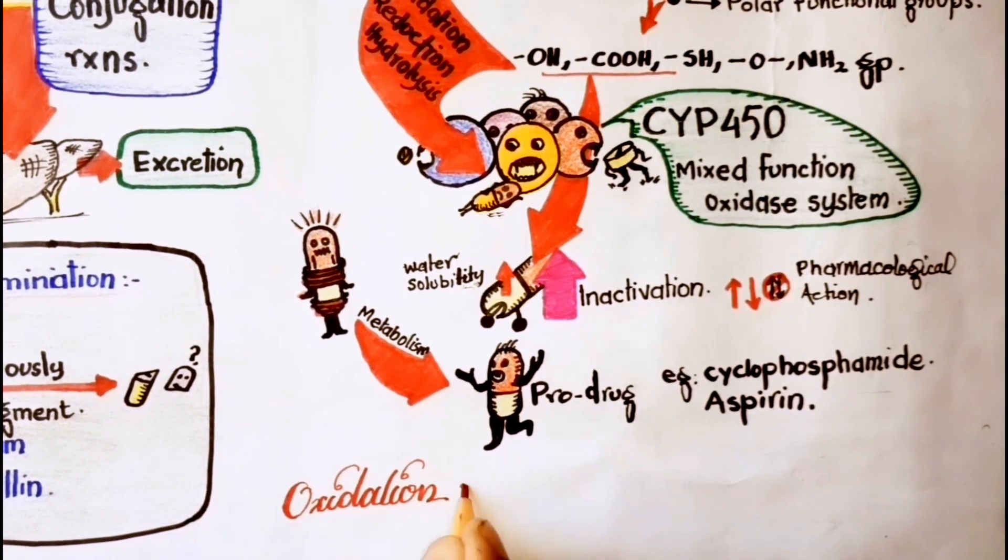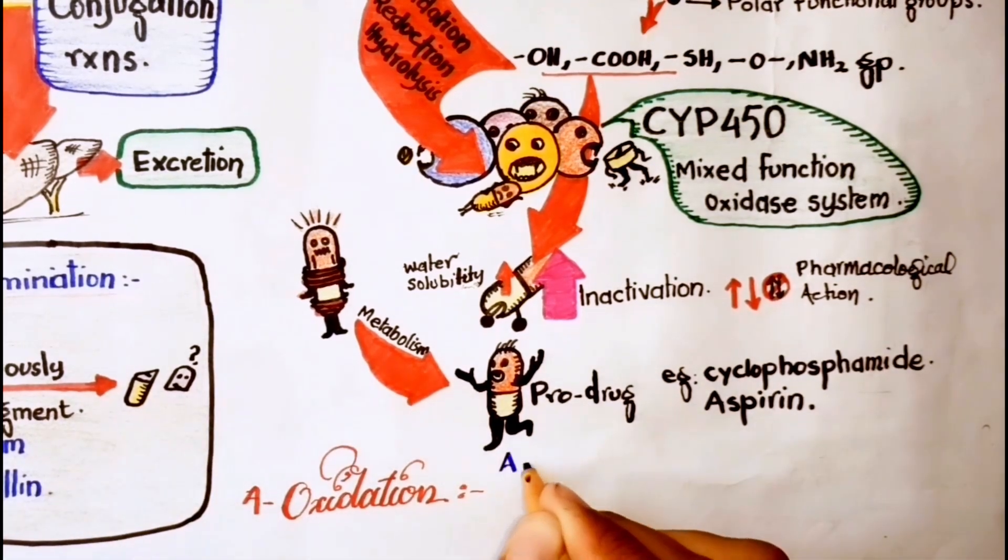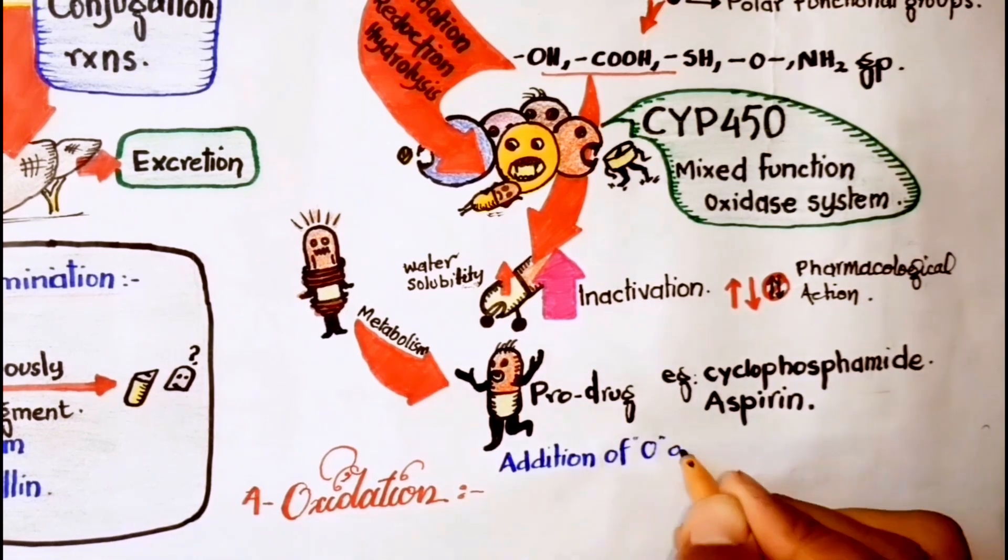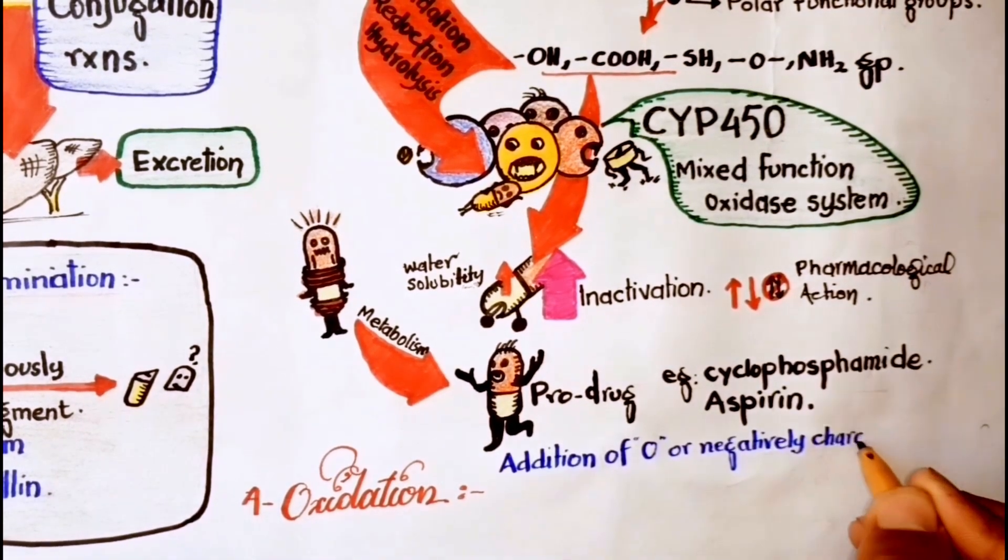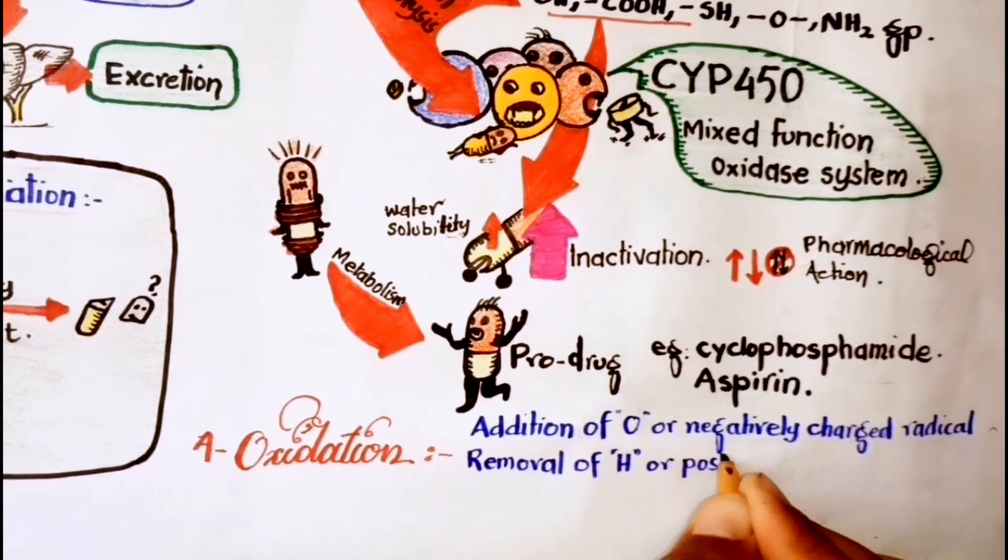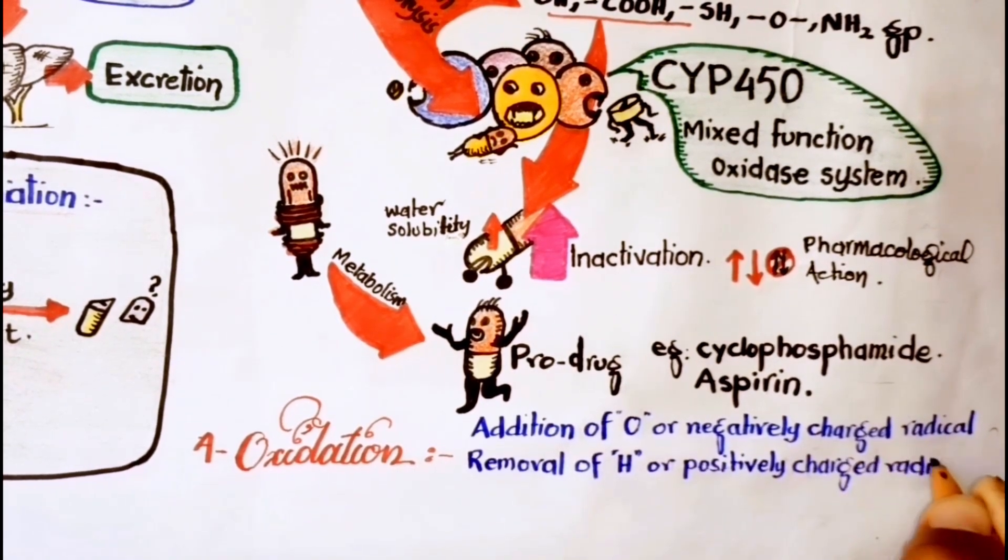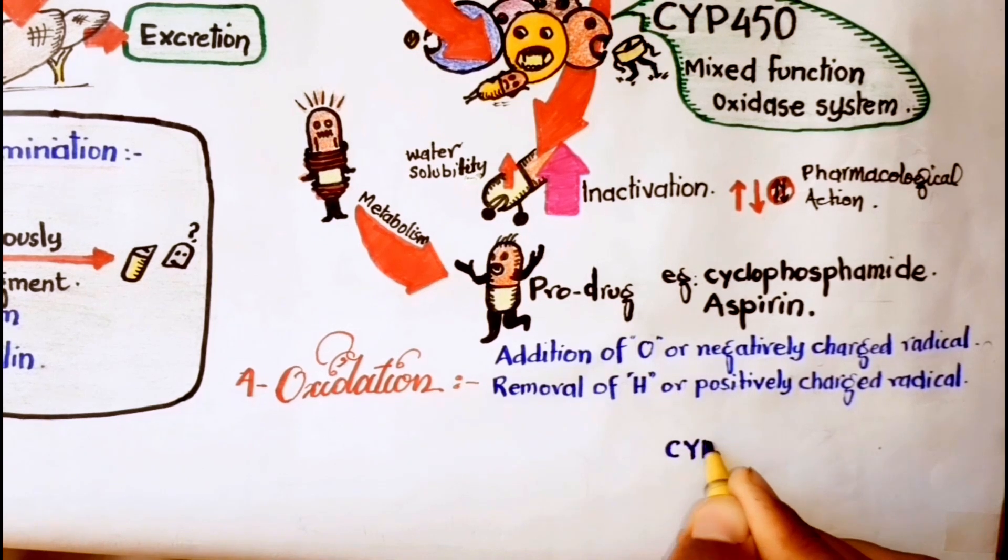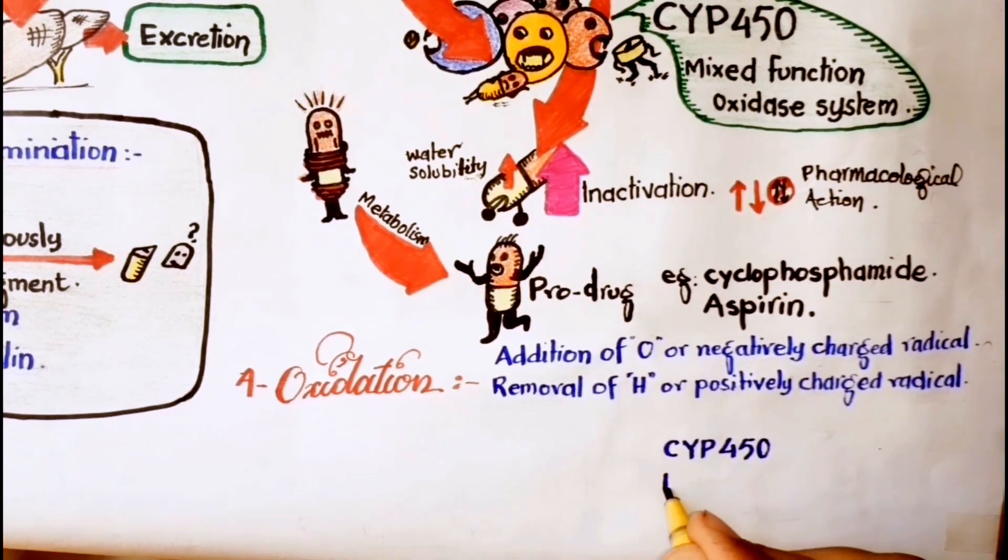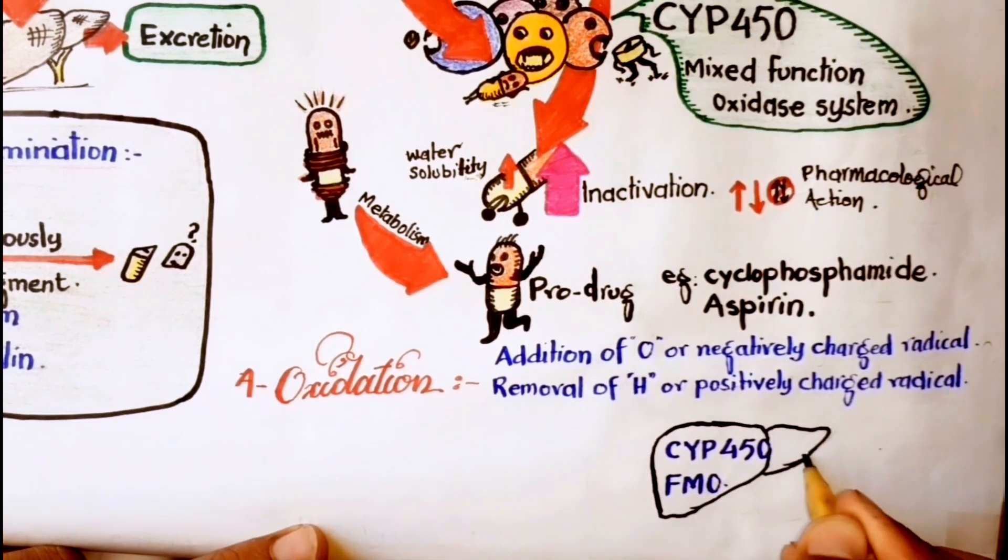Phase 1 reactions include oxidation. This reaction involves the addition of oxygen, or negatively charged radical, and removal of hydrogen, or positively charged radical. Phase 1 oxidative reactions are mostly carried out by cytochrome P450 and flavin-containing monoxygenase enzymes, mostly in the liver.